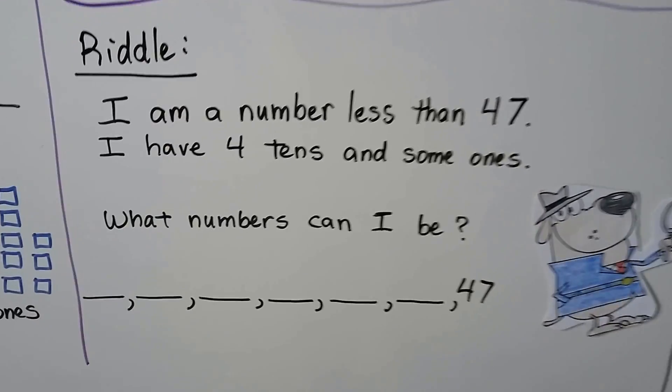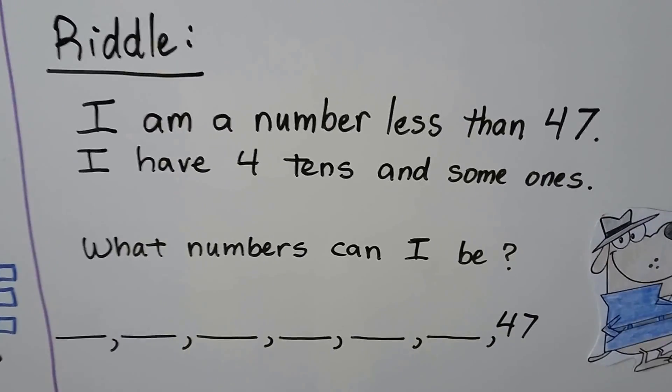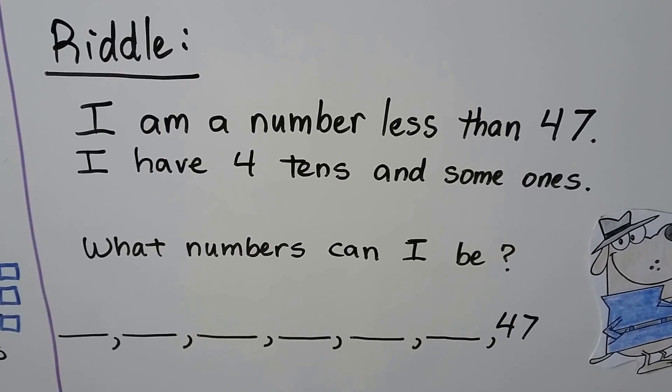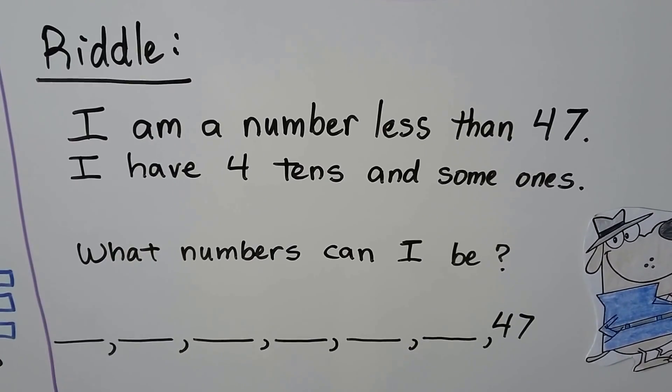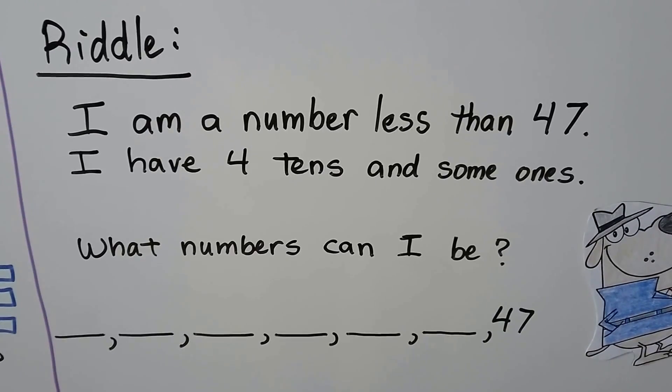Here's a riddle. I am a number less than 47. I have four tens and some ones. What numbers can I be?